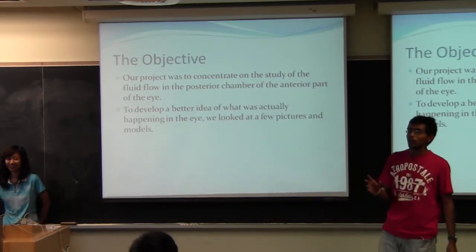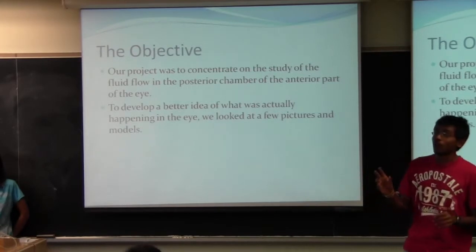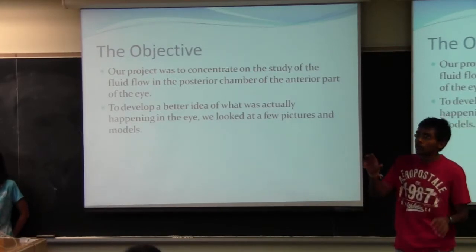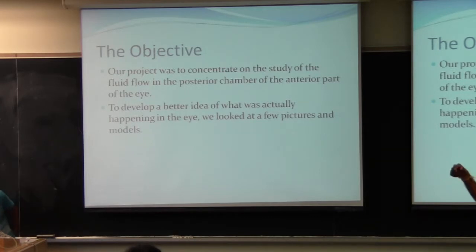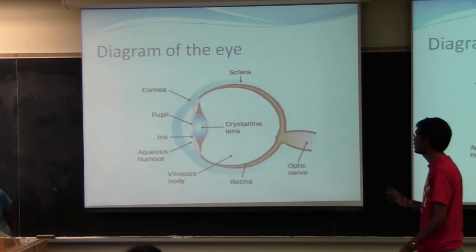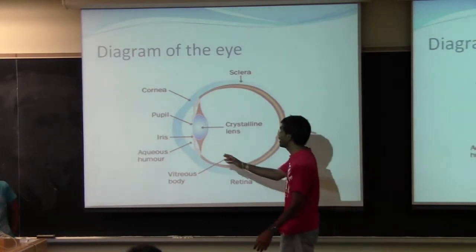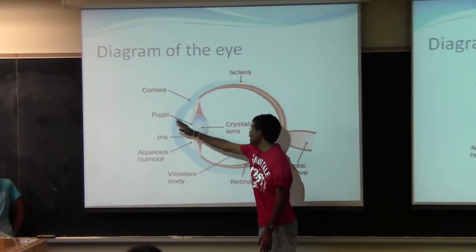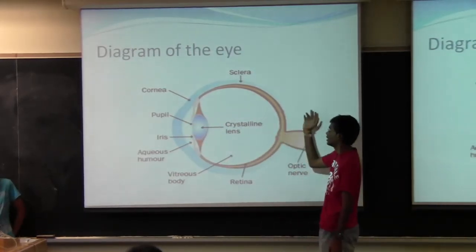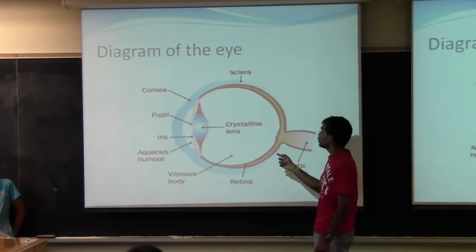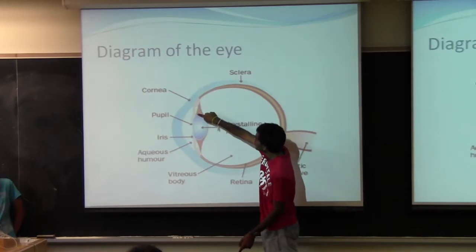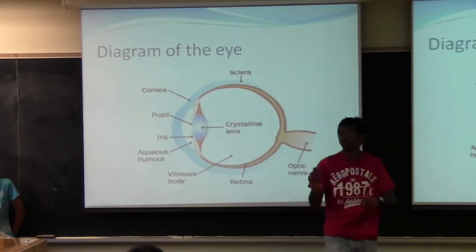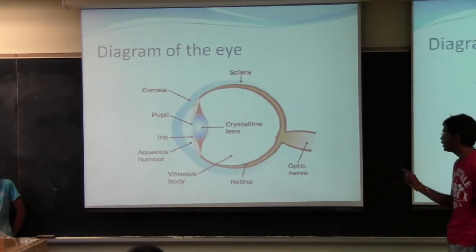Good. So the eye is a big thing when you think about it. We focused on one part of the eye, right, which is the posterior chamber of the anterior part of the eye. Fancy words, but all that means is that, so the anterior part of the eye is the front bit here, okay? This is the anterior part, the posterior is on this side. And we have to look at the posterior part of the anterior part. So the posterior part is this little chamber here, okay, this little chamber. So we looked at the fluid flow in that little chamber there.